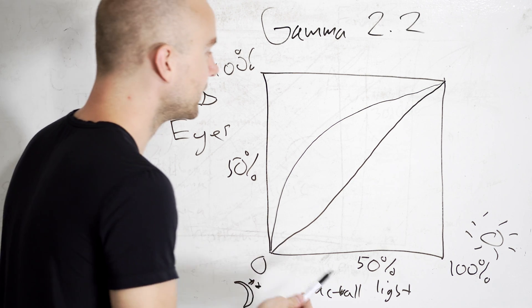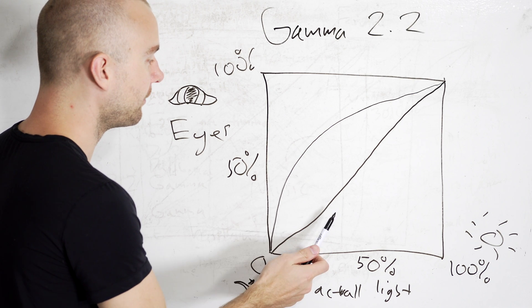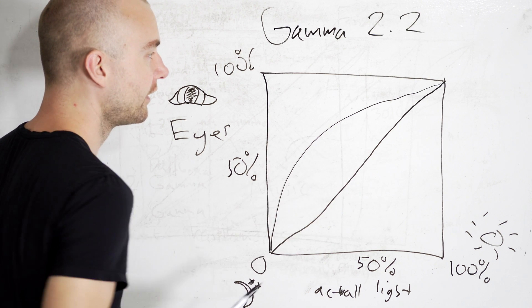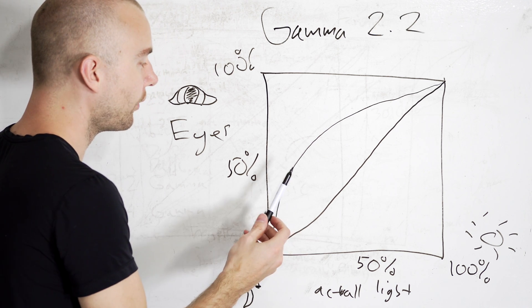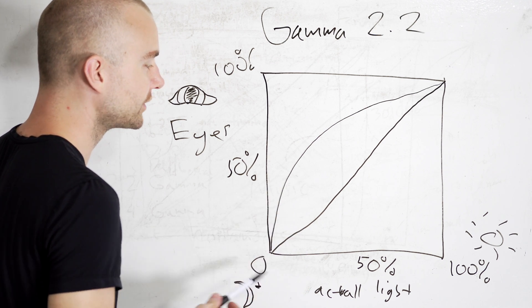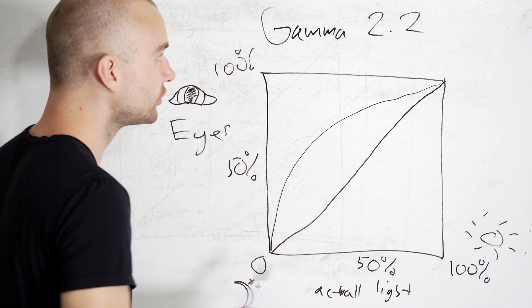So why don't we just take the linear curve and bring it up to match the curve of how we perceive light? Well, the problem with that is when we do that, we just make the actual picture look very washed out.